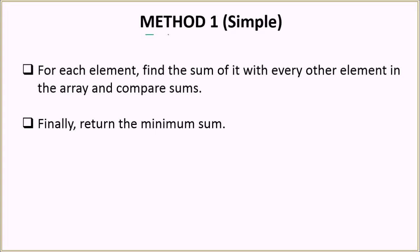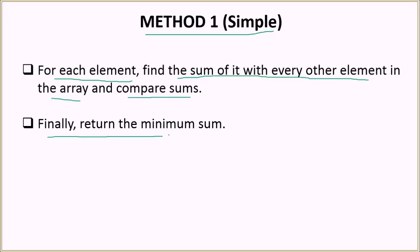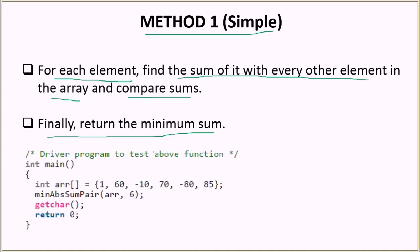So let's look at the methods to solve this. Method one is the simple brute force algorithm where we will be checking every combination. For each element, we find the sum of it with every other element in the array and then we compare their sums. Finally we return the minimum sum. That is the simplest solution we can think of. So let's look at the code.